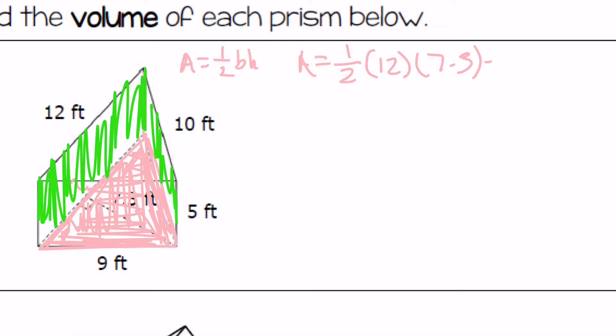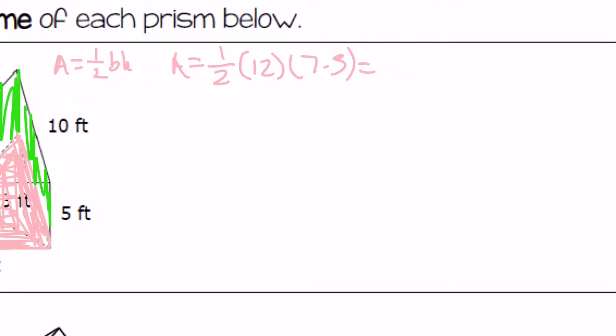So my area ends up being forty three point eight. So then, that makes the volume of this triangular prism, forty three point eight times five. So then the volume equals two hundred and nineteen feet cubed. And that's all there is to it.